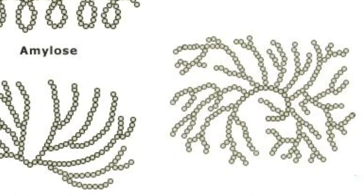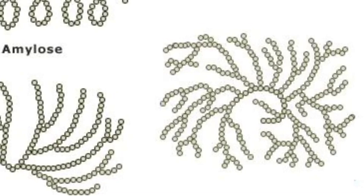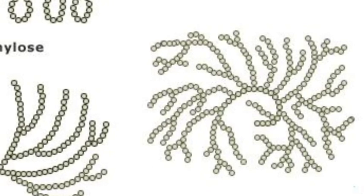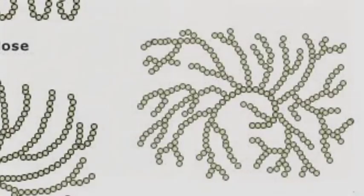However, it differs from starch because the 1-4 linked glucose chains in glycogen are shorter and have many more branches extending from the chains. This means that it is more compact than starch and forms glycogen granules in animal cells, especially liver and muscle cells.